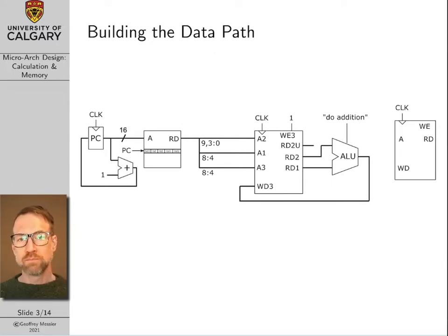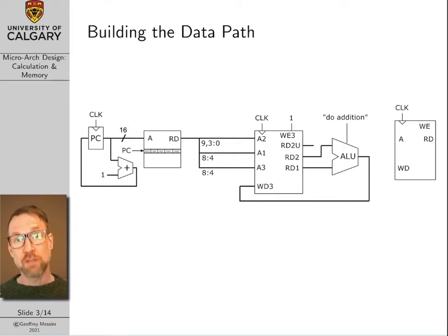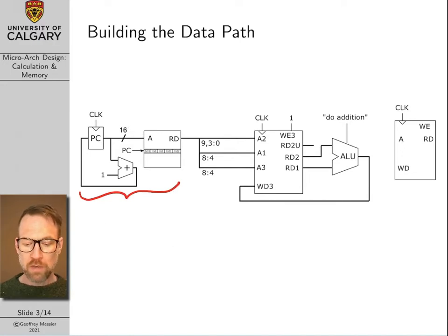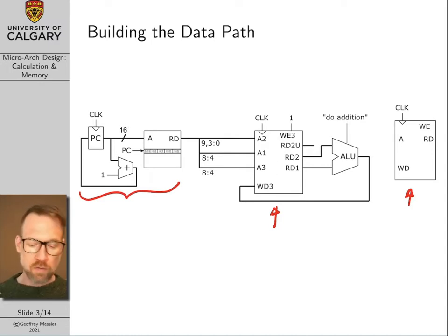It's been a while since we've looked at a picture of our microarchitecture, so let's revisit where we left off. When we last did look at our microarchitecture, we had a fully implemented instruction memory and program counter. We've talked about how to design the register file and what the registers are used for. We've talked about how to design data memory, and we configured our data path to perform an addition operation.